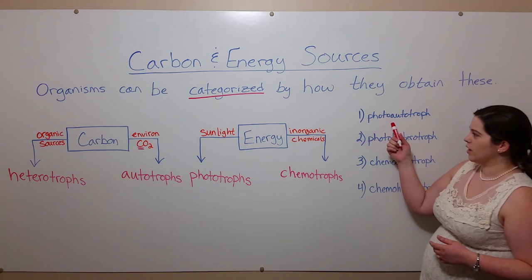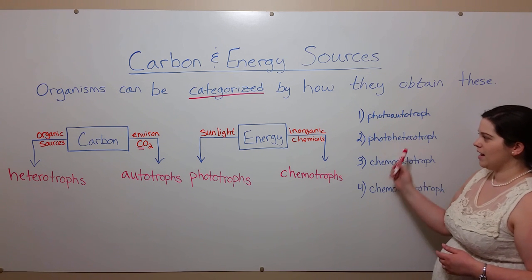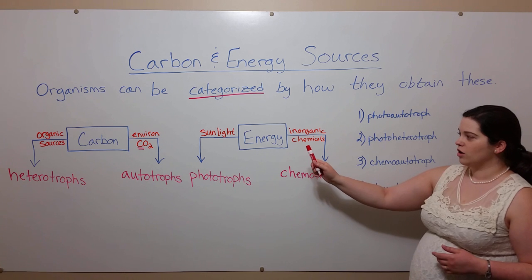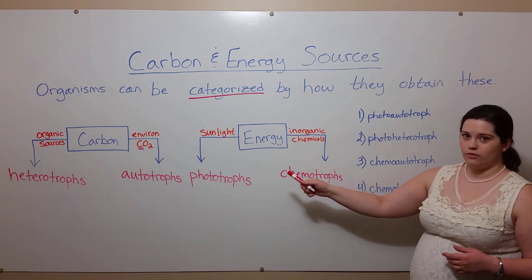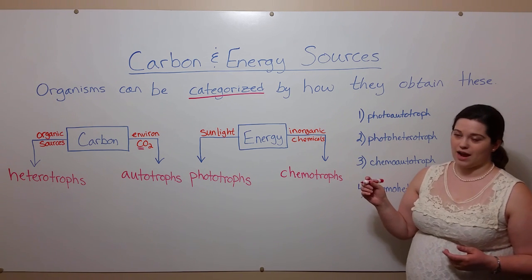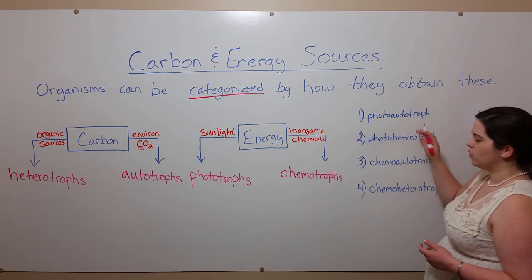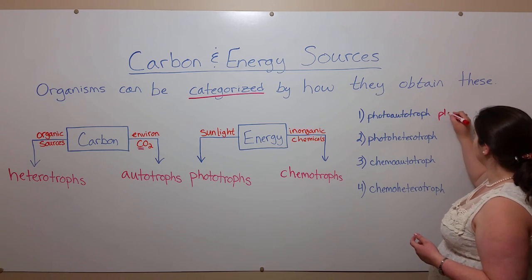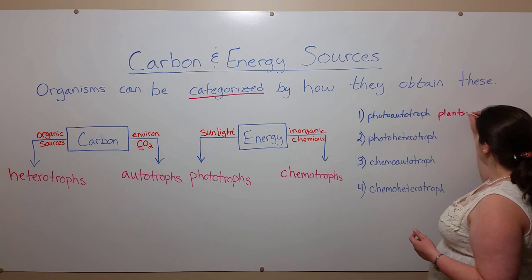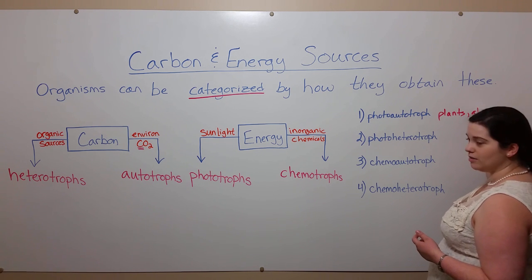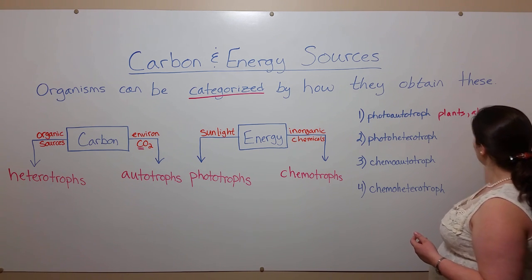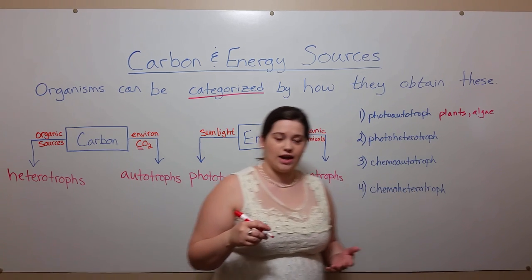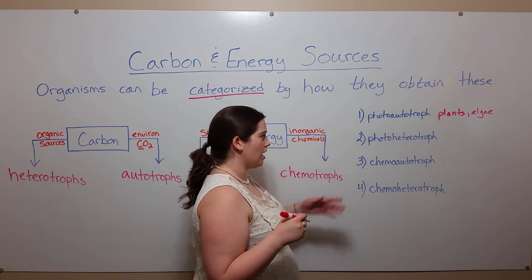Photoautotrophs are those organisms that get their energy from sunlight and their carbon from environmental carbon dioxide. These include organisms like plants, also algae, as well as cyanobacteria, which is a type of bacteria you may have heard of.